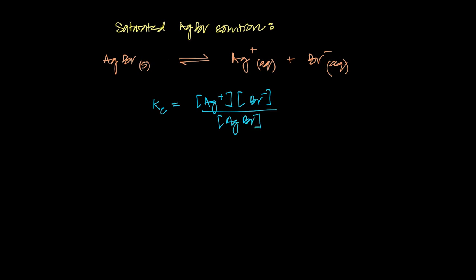Now this would be the Kc for this expression. Now we don't leave it at this stage for this chapter because what we know is that Kc is a constant for a particular substance at a particular temperature, and we also know that silver bromide is a solid. So this Kc is a constant, and this solid's concentration is also constant.